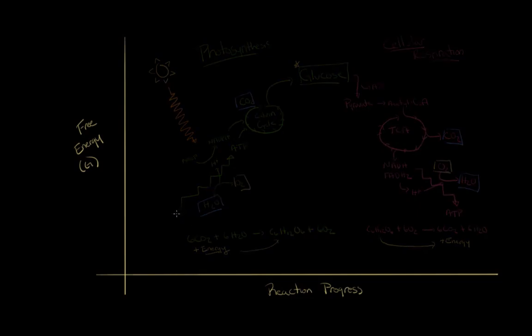If you look at the free energy level for where the reactants of photosynthesis start to where they end with glucose, you're adding energy to this. So you have a low free energy level and you're going to a higher free energy level. So energy is added, and that's from the sunlight.